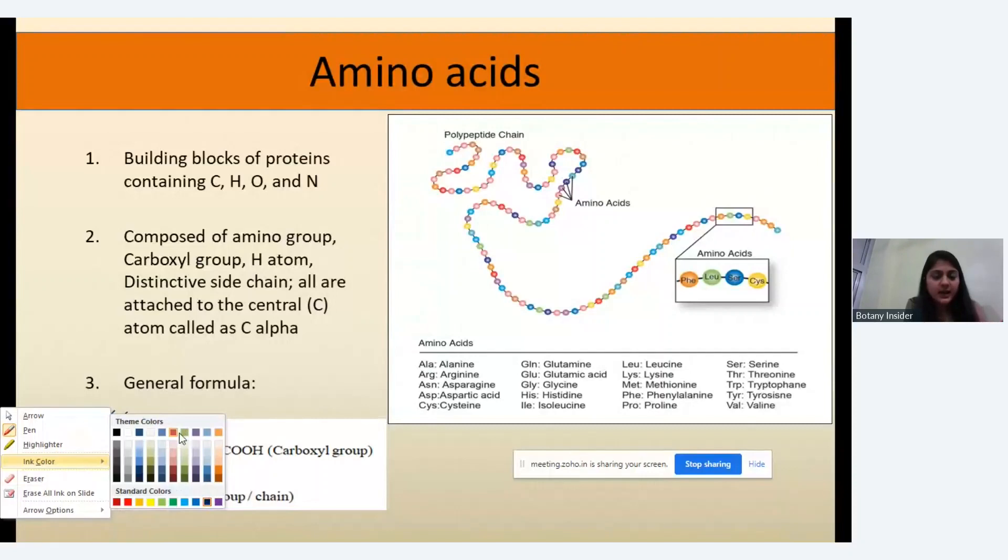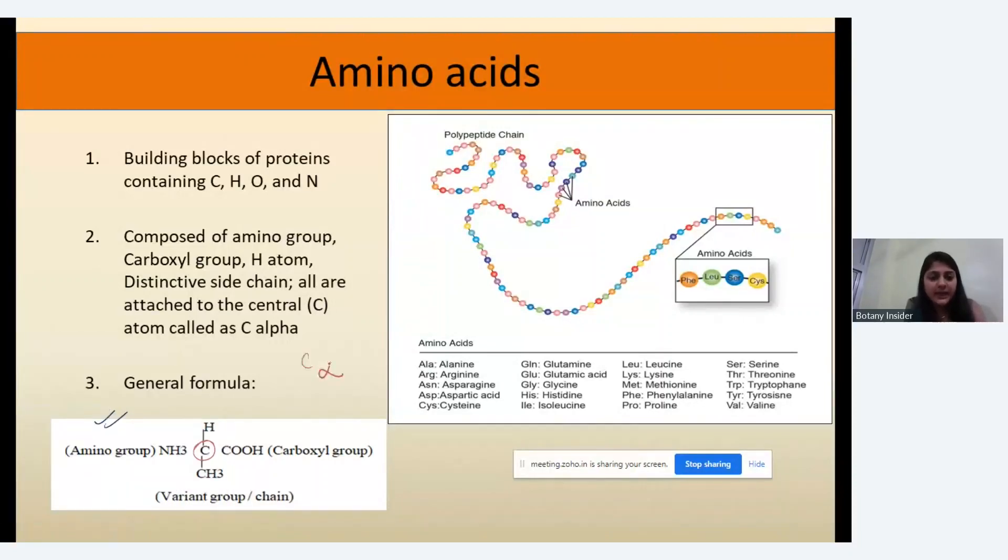We have the central carbon which is called the C-alpha. Then we have the H which is the hydrogen atom. After that we have COOH which is the carboxyl group. After that we have NH2 which is the amino group.